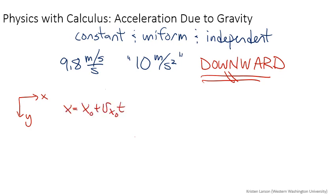and Y is equal to Y-naught plus VY-naught T plus one-half AY T squared. And from what I've been saying,